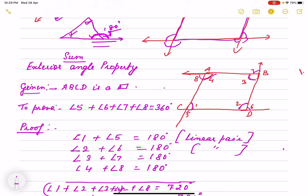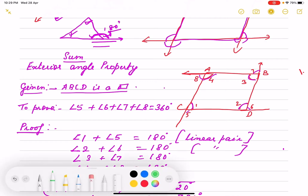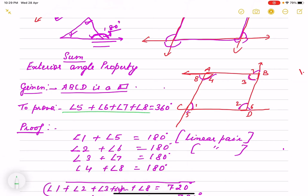So again first we write given ABCD is a quadrilateral. And we have to prove that our exterior angle that is angle 5, 6, 7, 8 is 360 degree. Just check what we are getting.